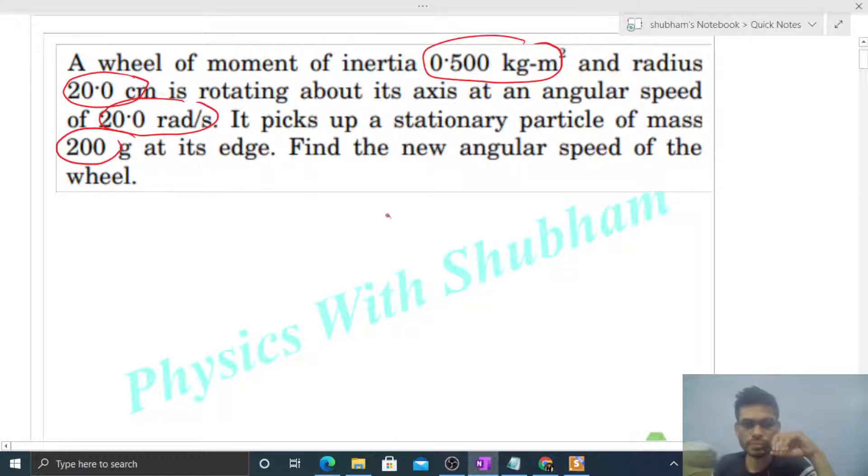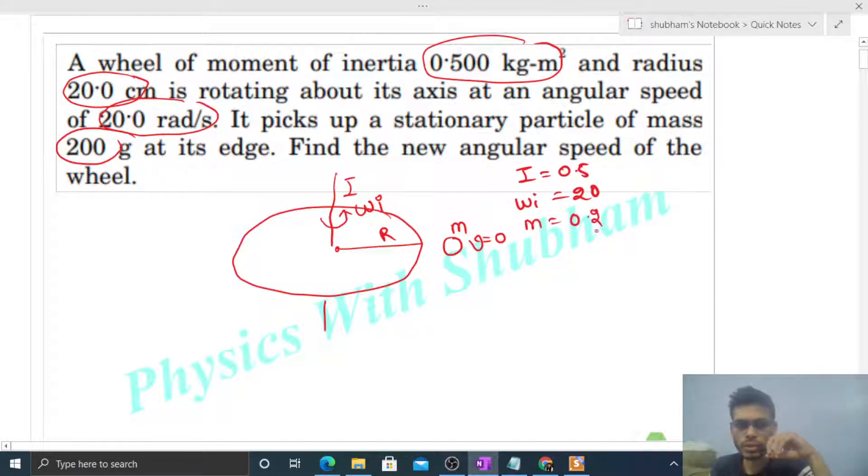So we have a wheel, its radius is given, and its moment of inertia about its axis is also given. There is a particle of mass small m. Initially this particle was at rest and this wheel was rotating with some angular velocity, the initial angular velocity. Everything is given: I value of 0.5, initial omega is 20 radians per second, m is 0.2 kilograms, and radius is 0.2 meters.